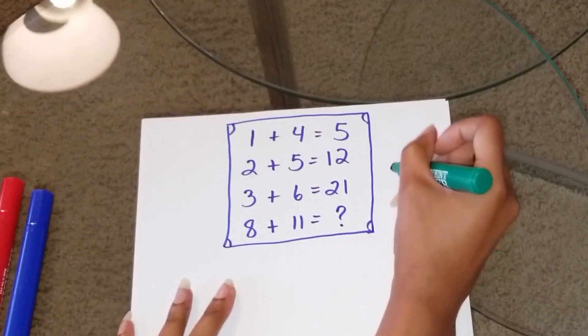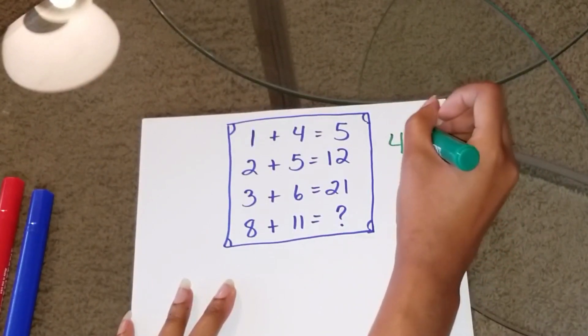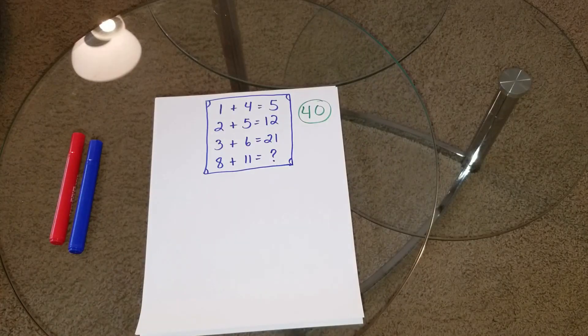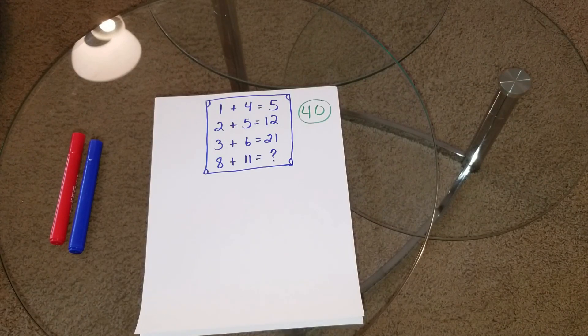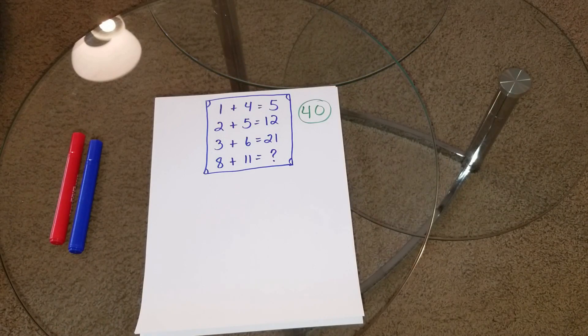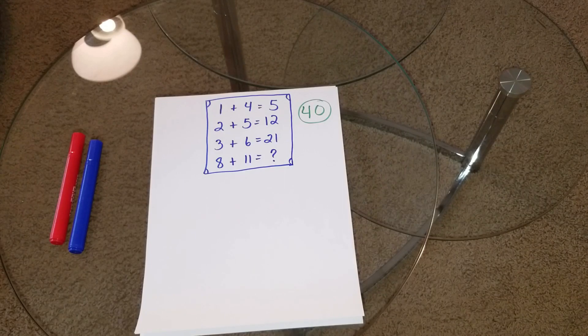So, we have one contender here. We have 40. And then people say, yeah, yeah, yeah, it's right, it's 40. However, what everybody is missing is the pattern. It's a mathematical riddle. And in math, you look at the first three lines to establish the pattern.